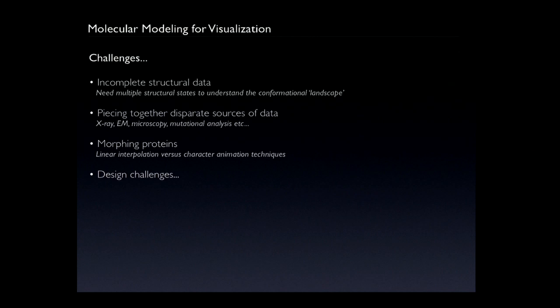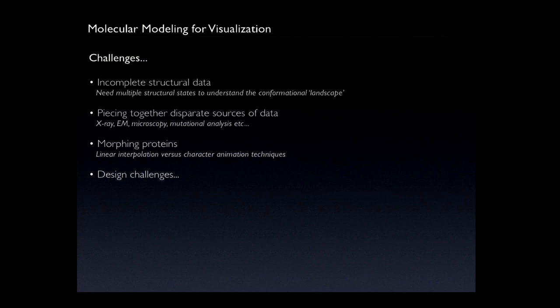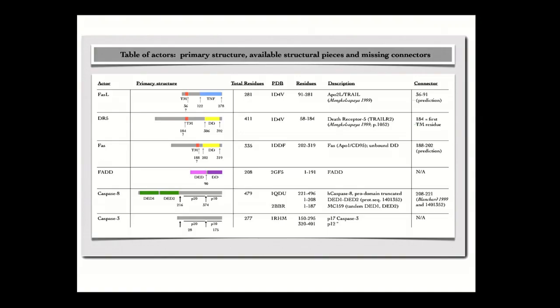We're dealing with incomplete structural data for the most part. Even if we have a lot of structural data, it comes with little gaps and we have to piece it together, often from different structural sources. You might have to do atomic resolution fitting within a lower-density map for a full-length protein — and it gets even worse for molecular assemblies. I've already talked about the morphing issues, and I'll come back to the design challenges.